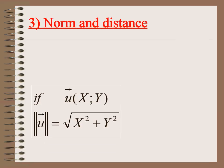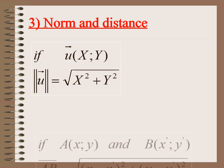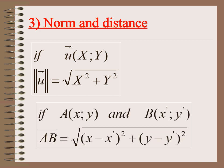Now, what is the norm and distance? If u = (x, y), then the norm of u is equal to √(x² + y²). But if I have two points A and B, the distance AB = √((x_B − x_A)² + (y_B − y_A)²).